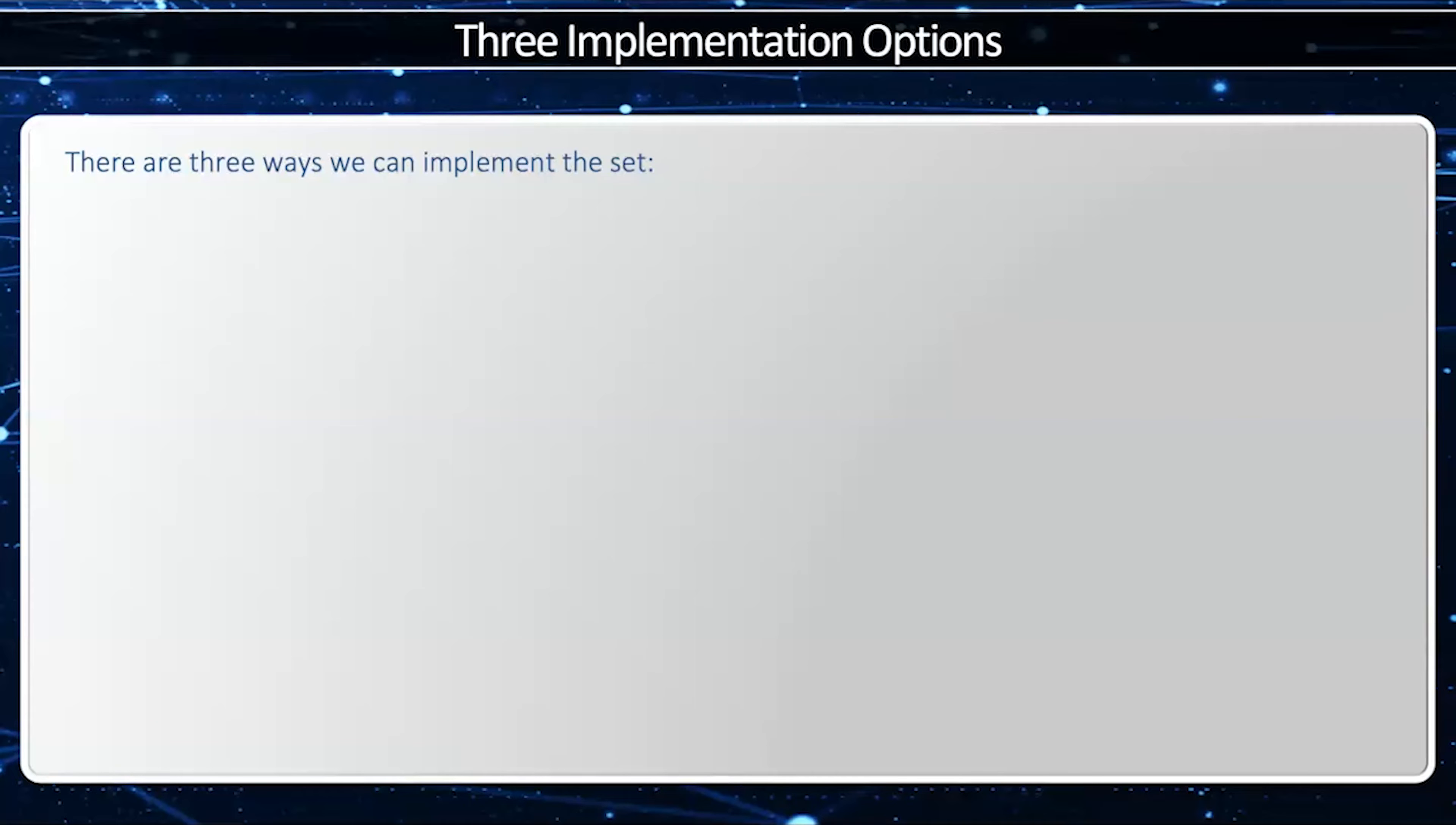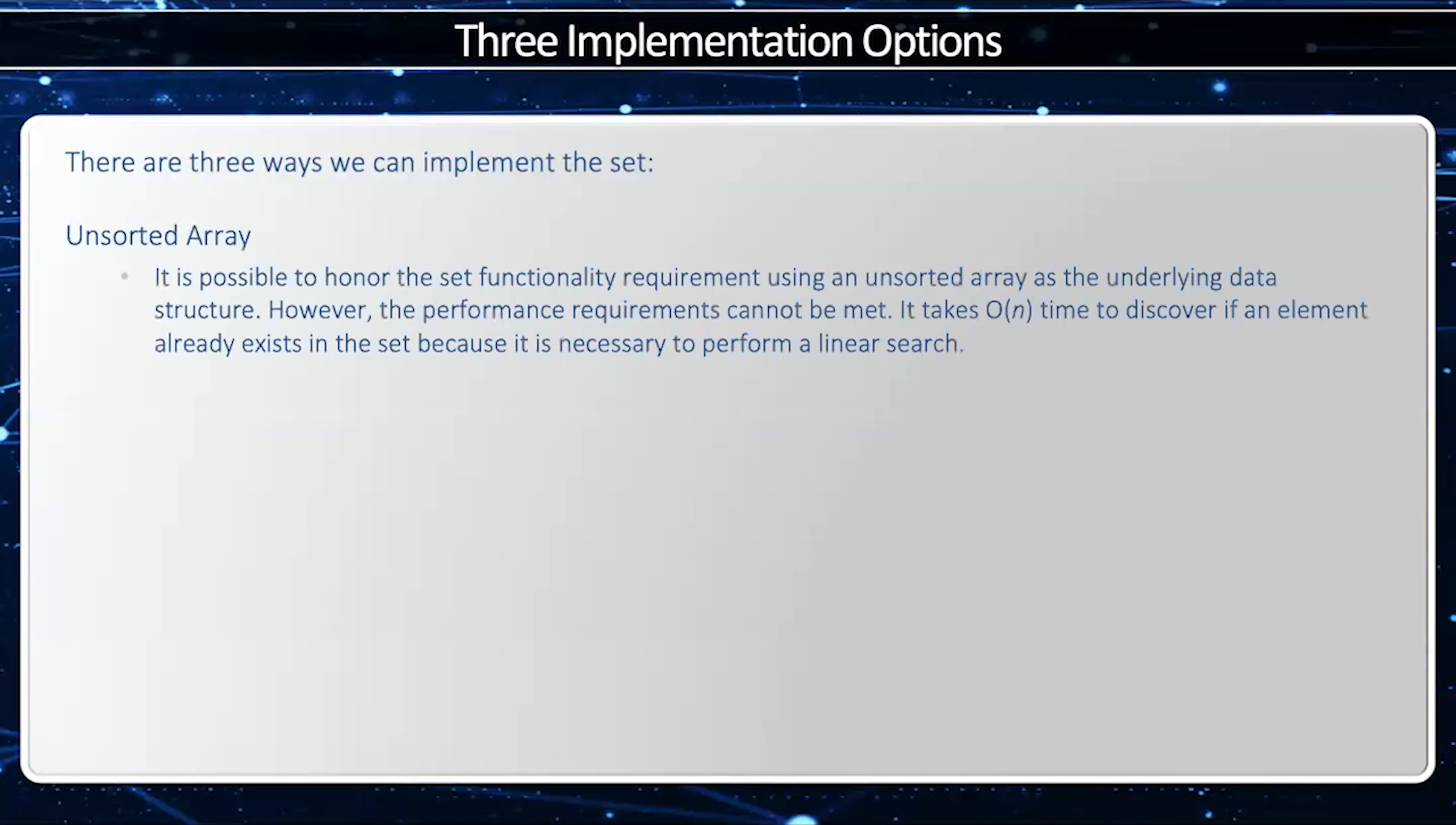There are three ways we can implement the set. The first way is an unsorted set. This is the easiest way for sure, but it's also really inefficient because all the operations are linear or O(n). If we want to insert an element, it's O(n) because we have to make sure it's unique. If we want to find if an element's in there, we have to do a linear search, which is O(n). And even if we remove an element, it's O(n) because we have to shift all the elements over because we can't have a blank spot in our array. So clearly this is not our best implementation.